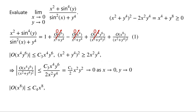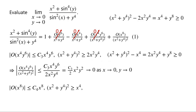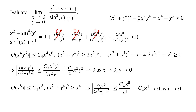The modulus of big O of x to the power of 8 must be less than or equal to c4 times x to the power of 8 for some constant c4. Because x squared plus y to the power of 4 all squared, minus x to the power of 4, equals 2x squared times y to the power of 4 plus y to the power of 8, which is greater than or equal to 0. So x squared plus y to the power of 4 all squared is greater than or equal to x to the power of 4. Therefore, the modulus of big O of x to the power of 8 over x squared plus y to the power of 4 all squared is less than or equal to c4 times x to the power of 8 over x to the power of 4, which equals c4 times x to the power of 4, which tends to 0 as x tends to 0. Thus, by the squeeze theorem, this term tends to 0 as x and y tend to 0.